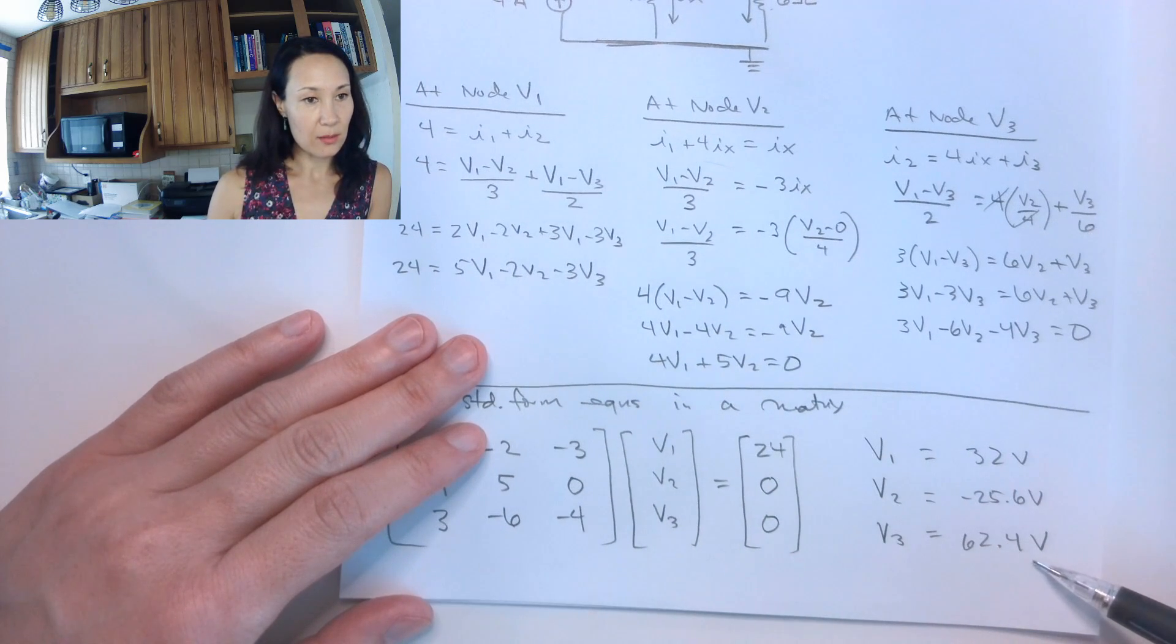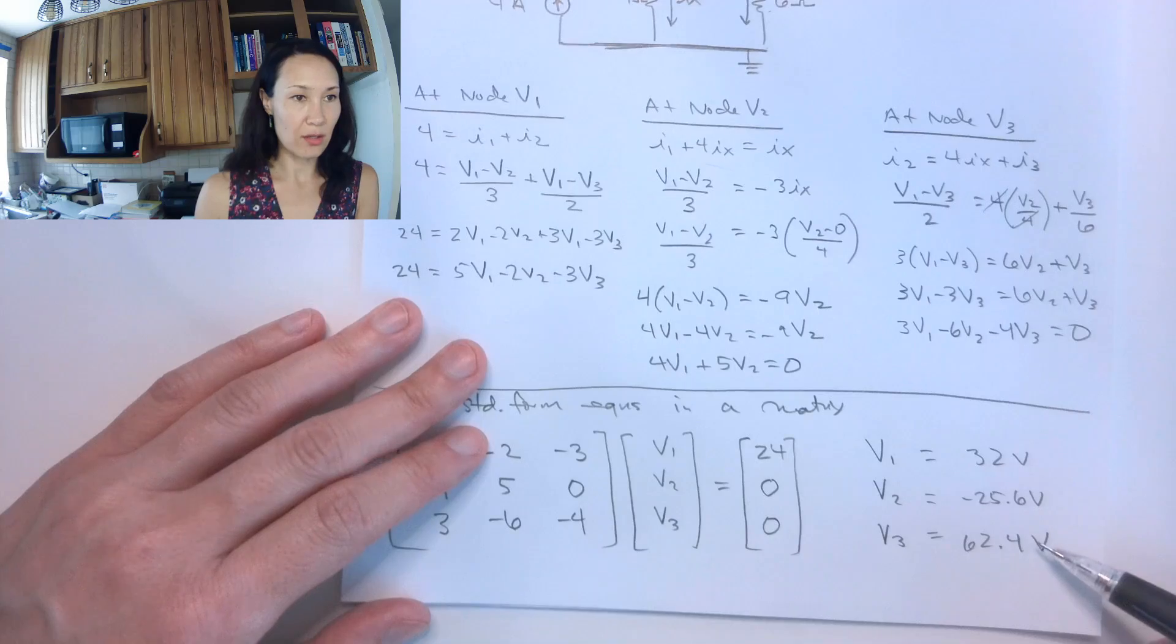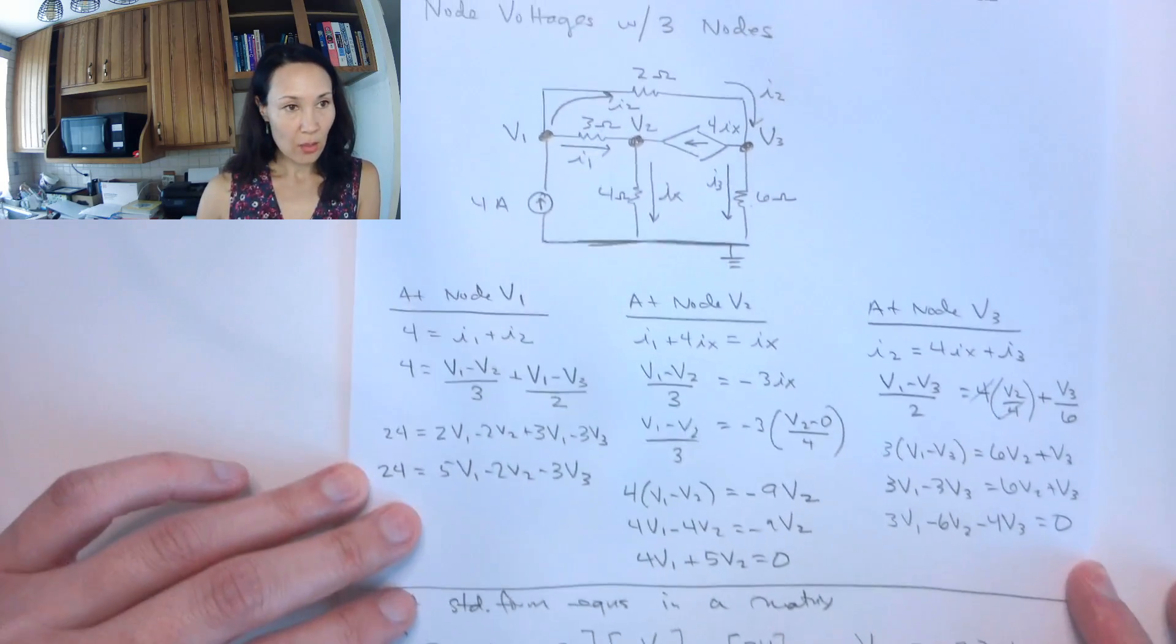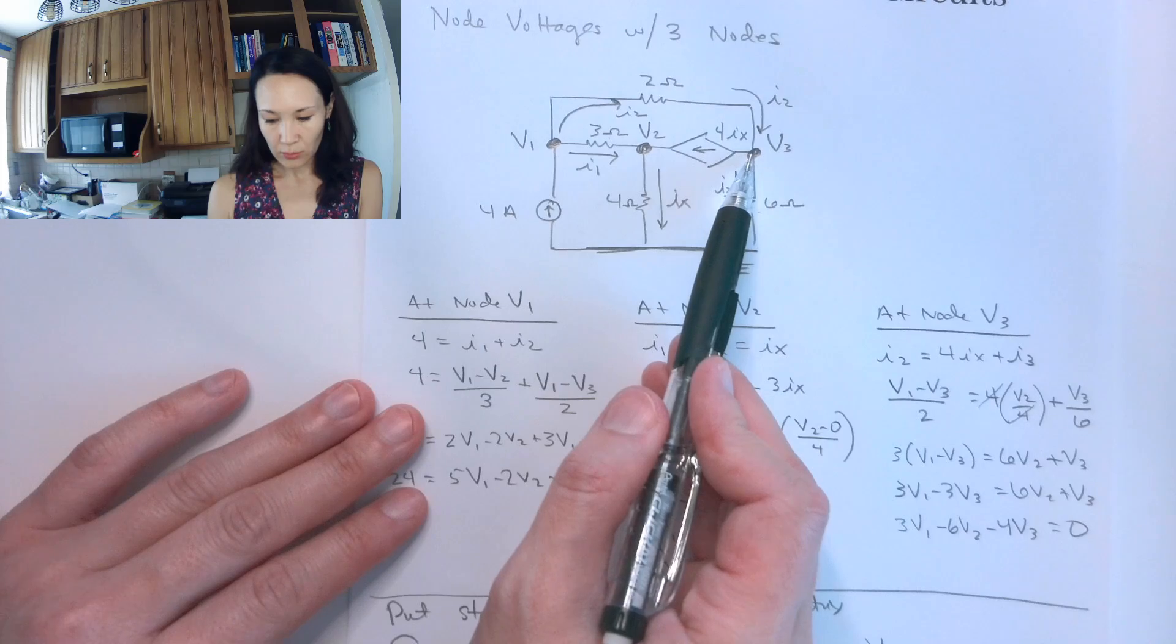I recopied these voltages here that I got from my row reduce echelon form calculator that I found online. And going back to our circuit, now we have V1, V2, V3.